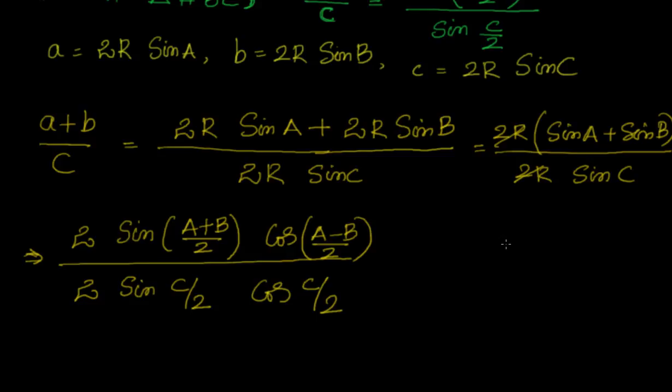Now, we know that A plus B plus C equals 180 degrees because in a triangle all the angles sum up to 180 degrees. So, if you divide this by 2, you know that (A+B)/2 equals 90 minus C/2. So now, sin((A+B)/2) is nothing but equal to cos(C/2).